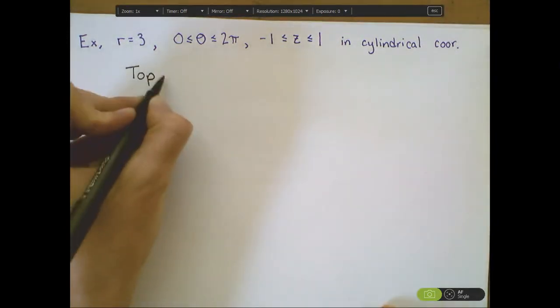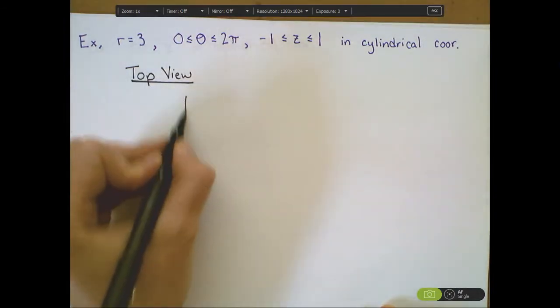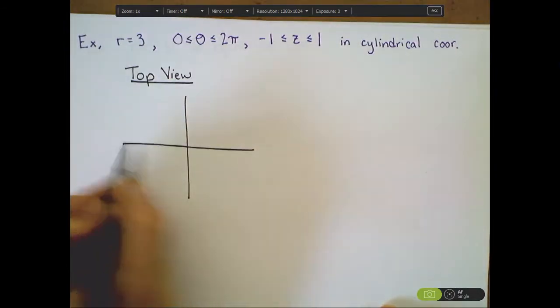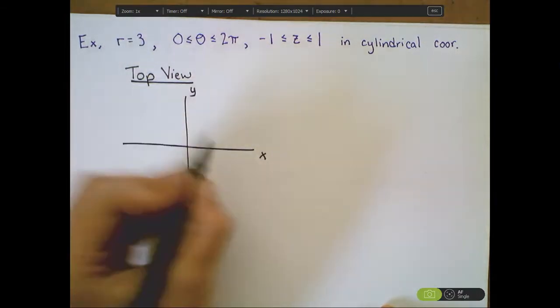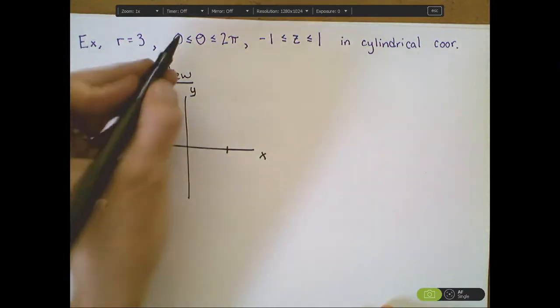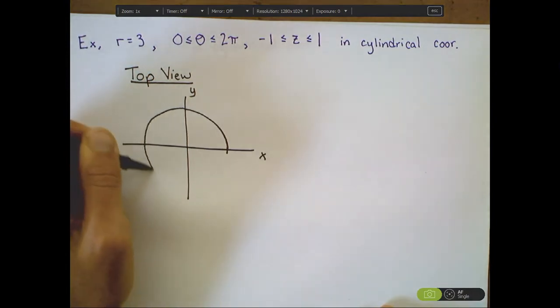Let's graph what this looks like. First, I'm going to take a look at a top view. As a top view, setting my radius constantly equal to 3 and allowing theta to span all the way from 0 to 2 pi traces out a circle of radius 3.